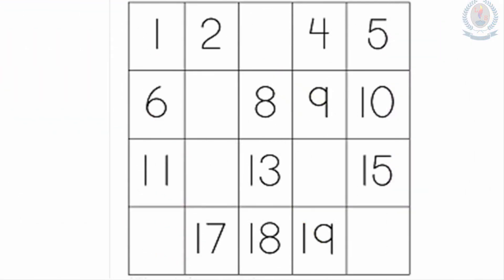This is our next activity. Here you have to write the missing number. Shall we do it? 1, 2, blank — which number comes in this blank? 1, 2 — what is the number after number 2? It is number 3. Then 4, 5, 6, blank — what number comes in this blank? The number between 6 and 8. It is number 7.